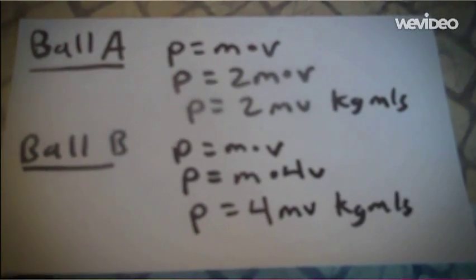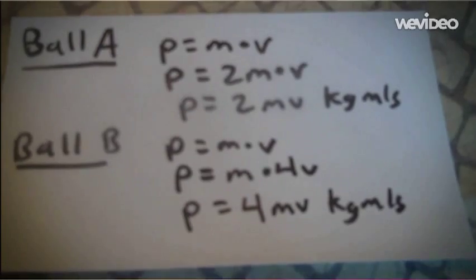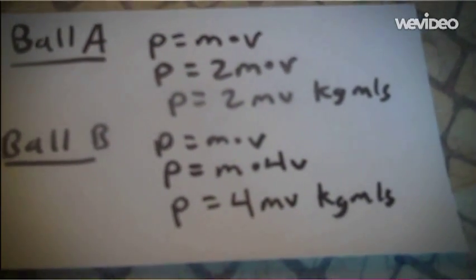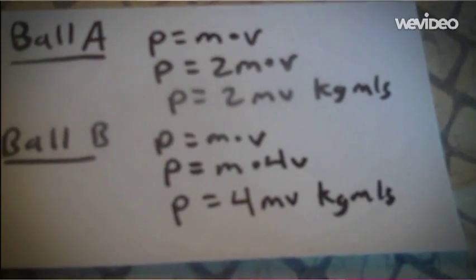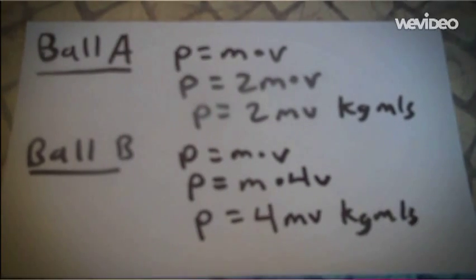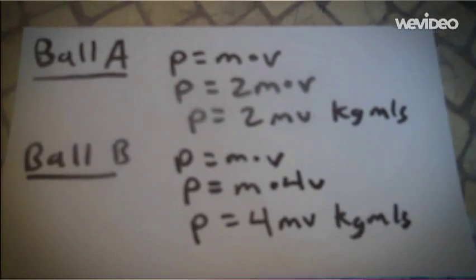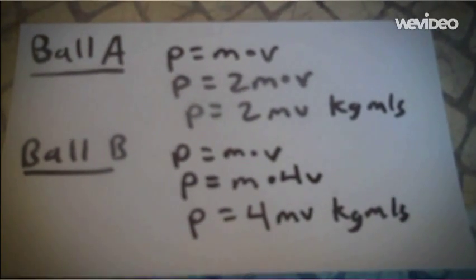Because ball A is p equals m times v, so p equals 2m times v, which equals 2mv kilograms meters per second. And ball B is p equals m times 4v, so p equals 4mv kilograms meters per second.